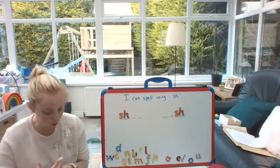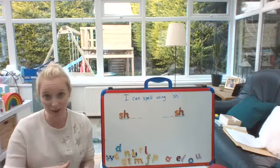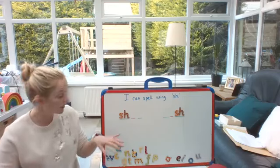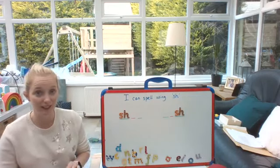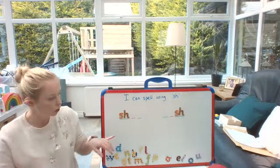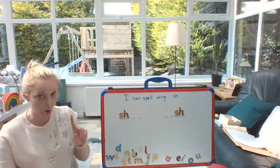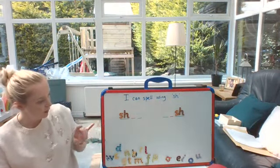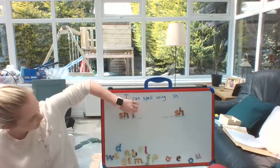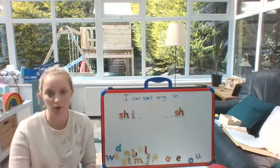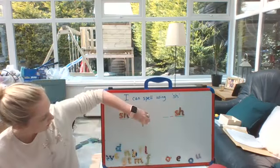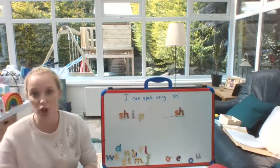So the first word we're going to put up on our board is one that was in our story — it's a big boat that you could find in the ocean, and it begins with SH. The word is ship. Let's think about what we need for ship. SH — our first sound, two letters, one sound. Then I. Ship. So our vowel is the I, the short 'i' sound. And what's at the end of our word? Ship — it's a P. So we've got ship.